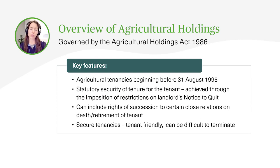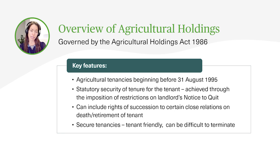Just a brief overview of agricultural holdings and the exact type of tenancy that I'll be talking about today. Agricultural holdings are governed by the Agricultural Holdings Act 1986. The key features of those are shown on the slide. They are tenancies beginning before the 31st of August 1995. There's statutory security of tenure for the tenant, imposed through the restriction on the landlord's notice to quit. That means the landlord can only take back possession in really restrictive circumstances. These tenancies can also include rights of succession to a certain close relative on death and retirement. And they're generally seen, in comparison to the later farm business tenancies, to be quite tenant-friendly, because they are difficult to terminate.